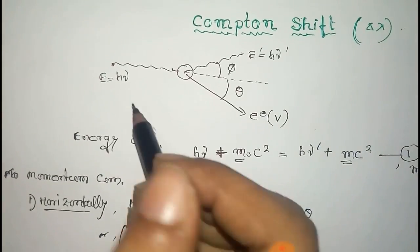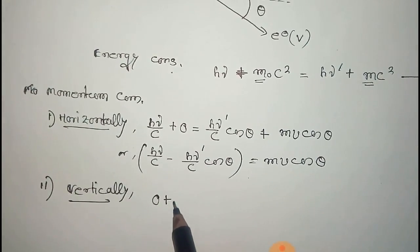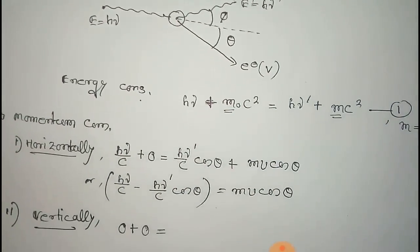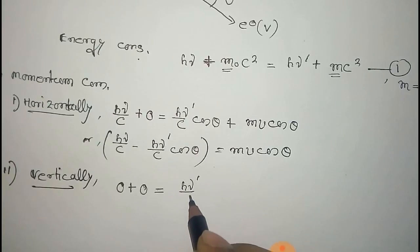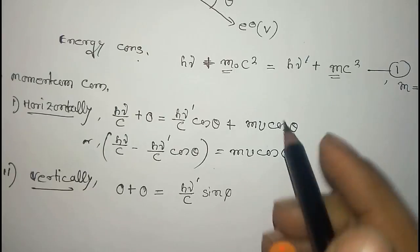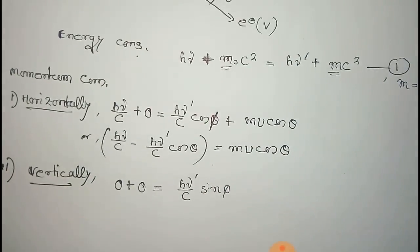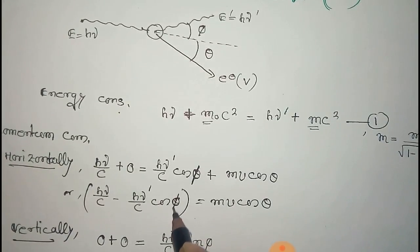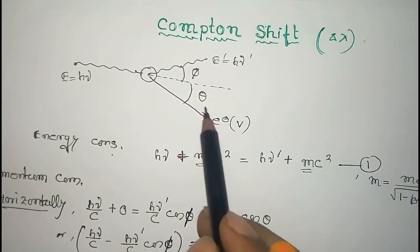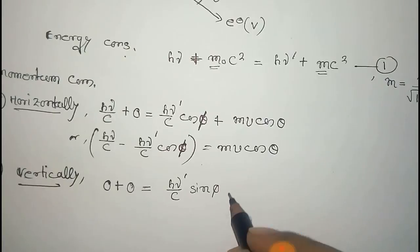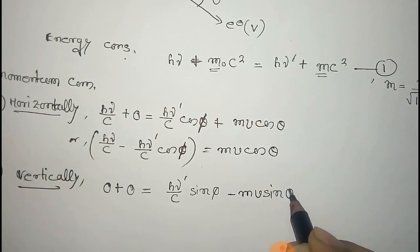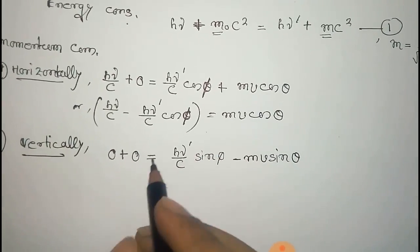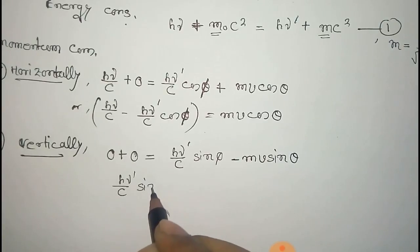For vertical momentum conservation, before collision the photon has no vertical component and the electron is at rest, so both are zero. After collision, the photon has a vertical component h-nu-prime over C times sin-phi, since the scattered photon makes angle phi with the horizontal. The electron has vertical momentum M V sin-theta, with a negative sign because the electron's vertical component is in the opposite direction to the photon's vertical component.